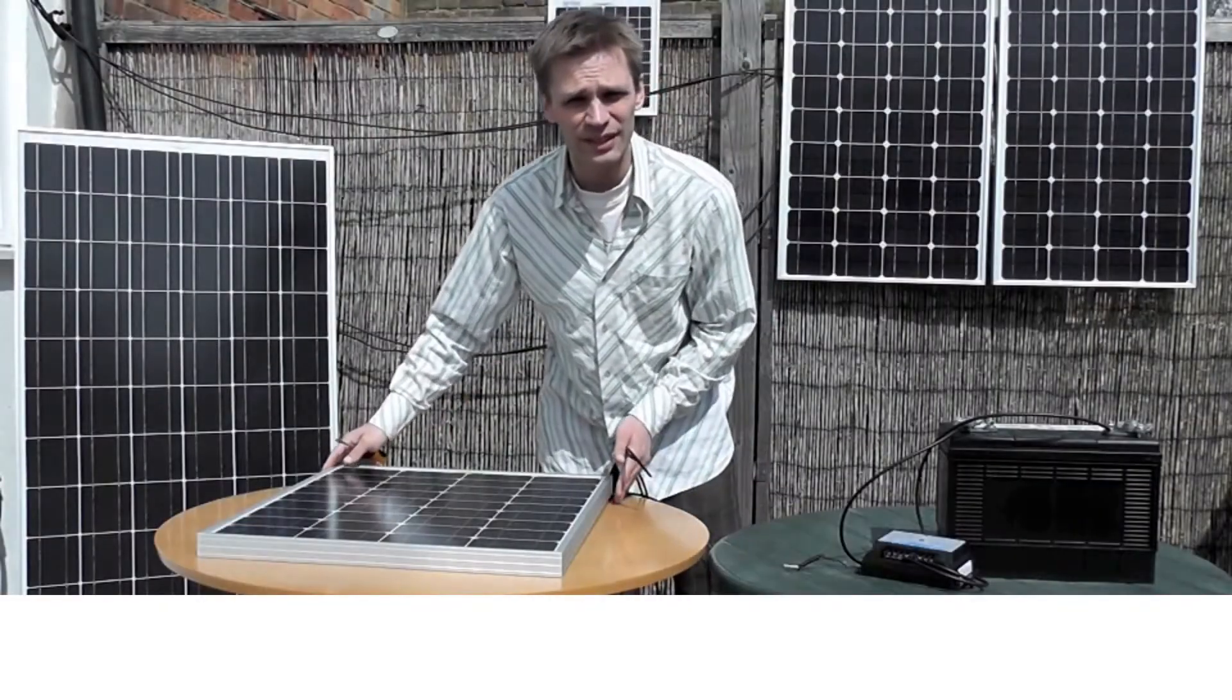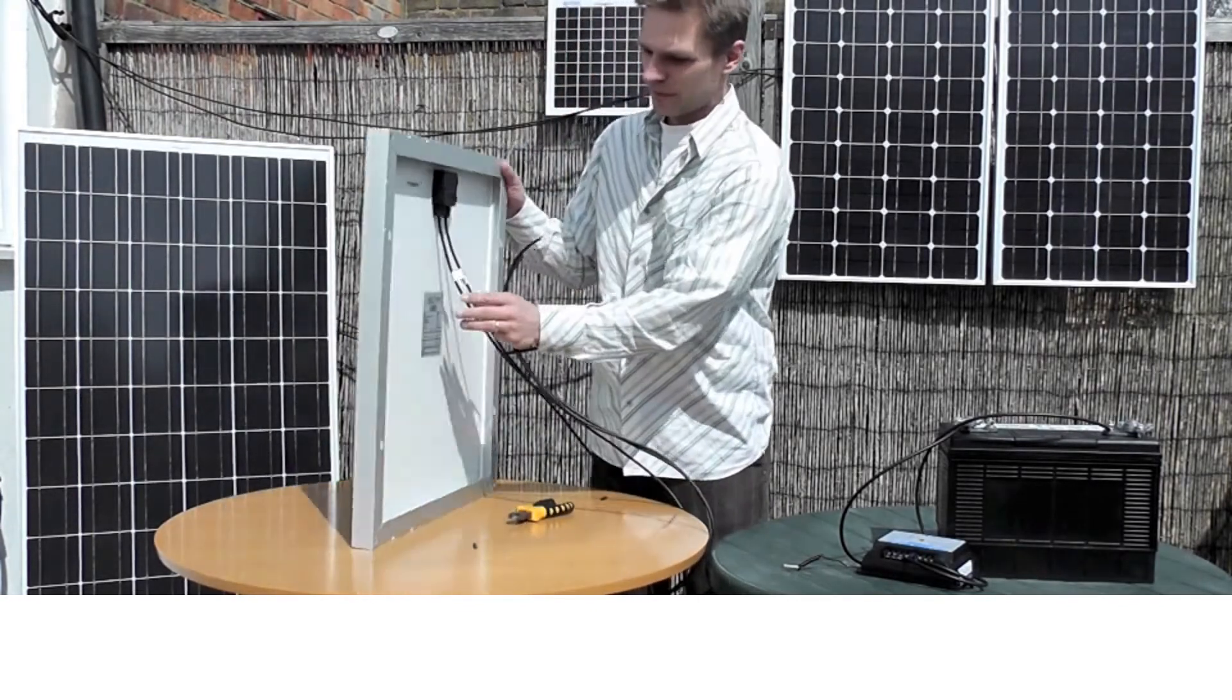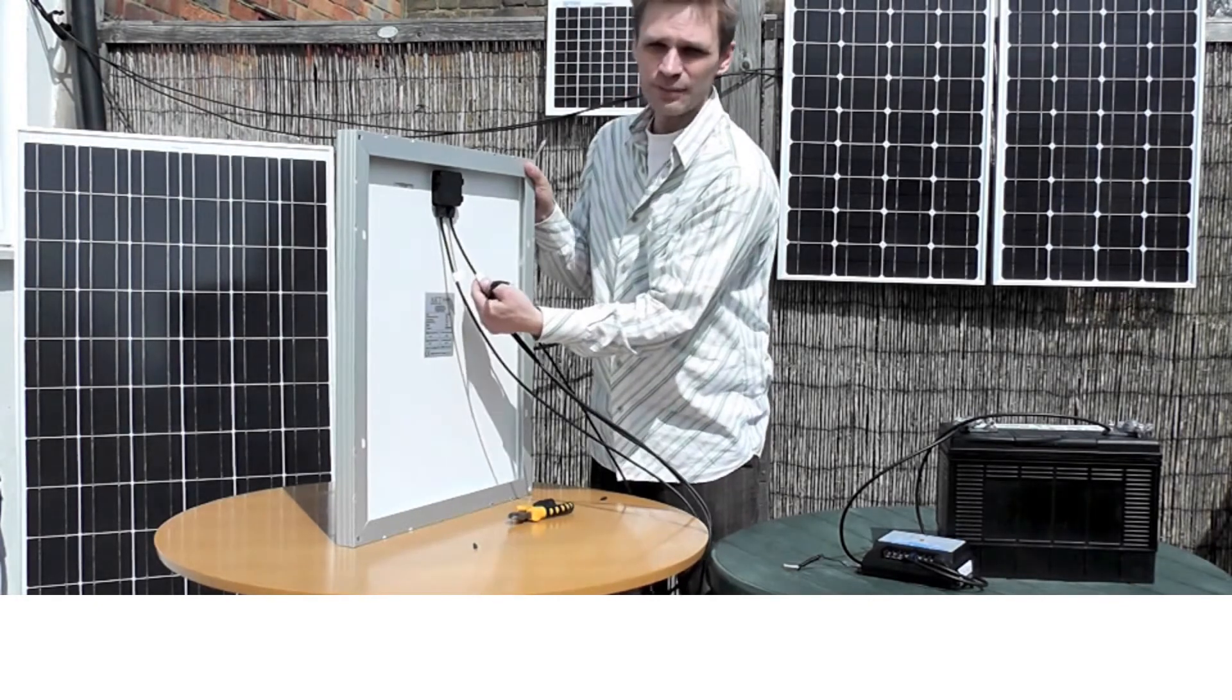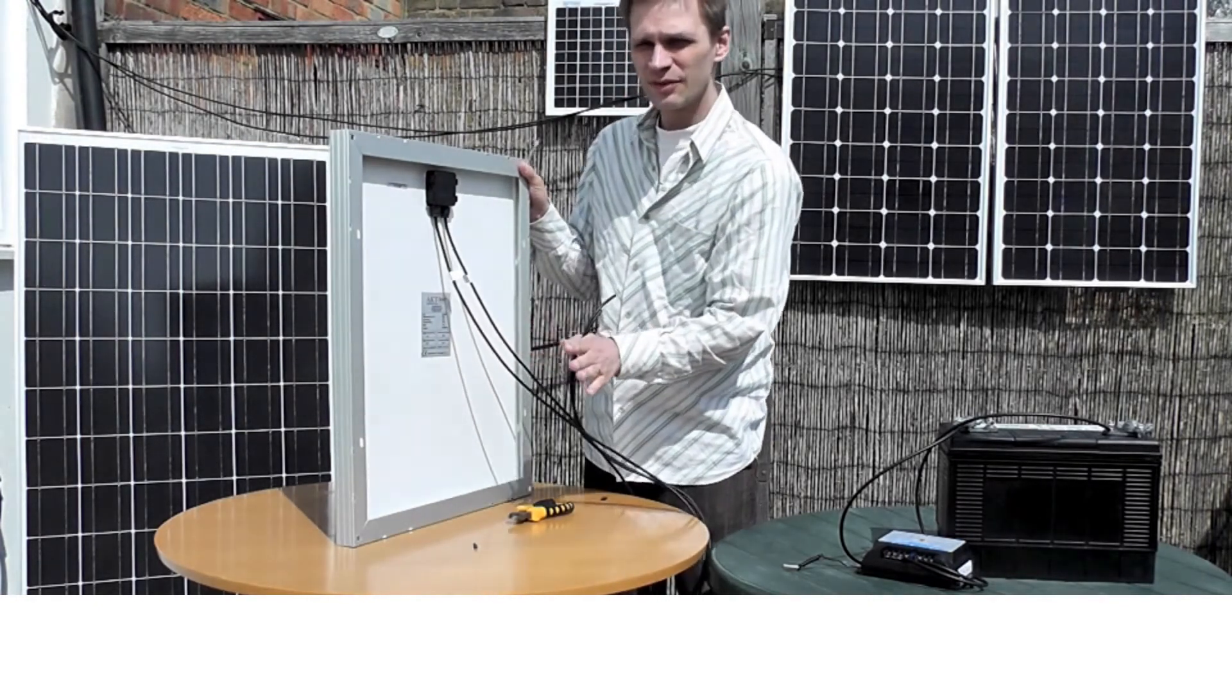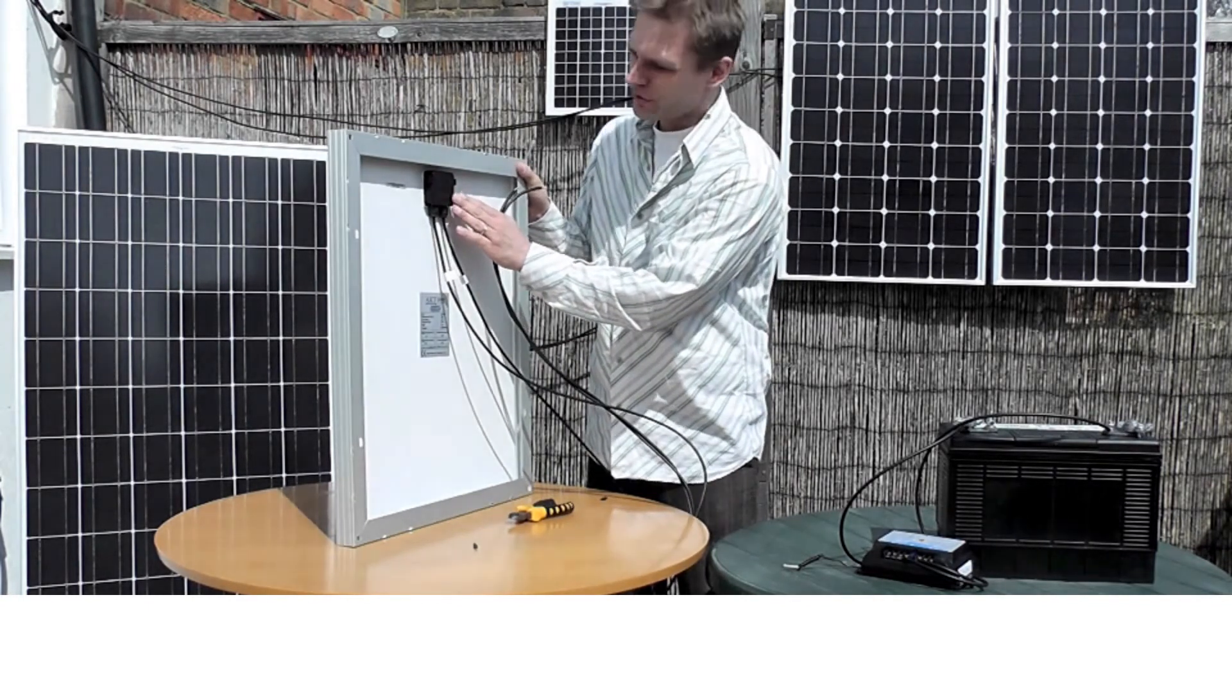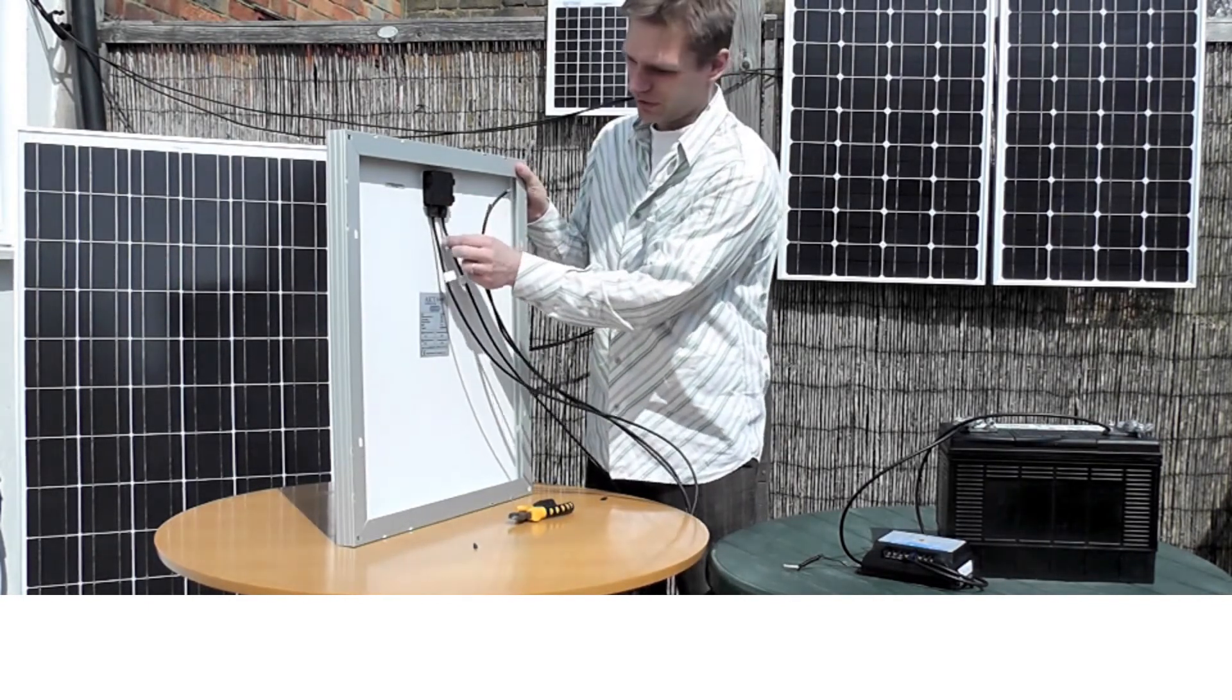So now you need to work out which is the positive and the negative wire. You'll see on the back here, you have this one labelled as negative, and this one labelled as positive. And another way of working this out, is that always on solar panels, the positive is on the right of the junction box. So that's this wire here.